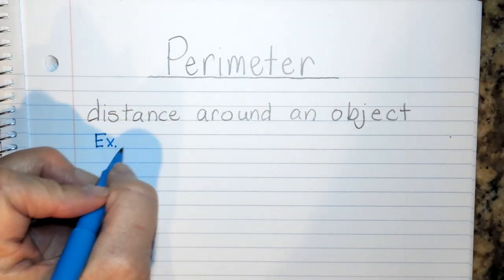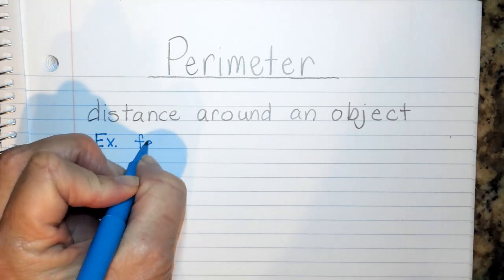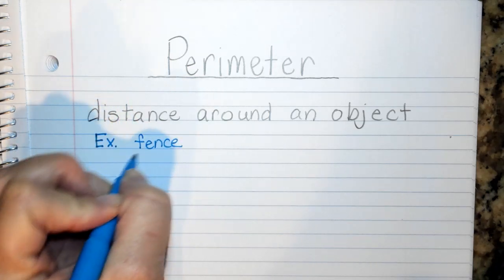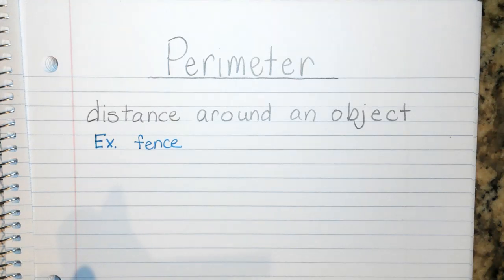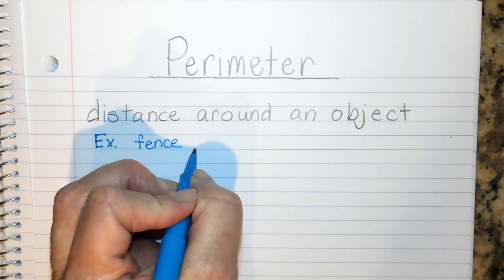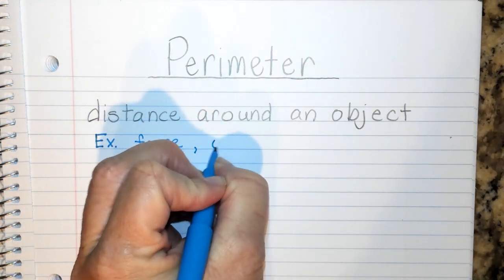Some examples of perimeter would be the fence—the fence outlines your backyard. Sometimes when we want to think about perimeter, we want to think about the outline of a figure.